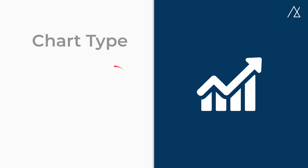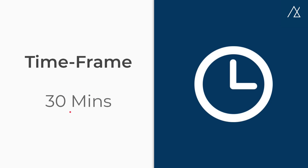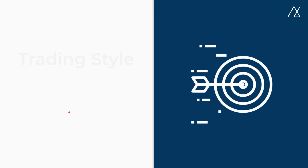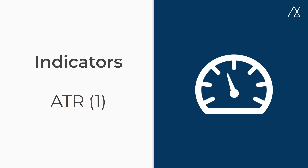Let's begin with trade setup. We are going to use candlestick as the chart type; if you are comfortable with OHLC or bar charts, that is also fine. For the timeframe, we will keep the chart interval at 30 minutes. Our trading style will be day trading, also known as intraday trading, meaning we won't carry positions overnight. We will be using the ATR indicator — Average True Range — with a period of 1. Change the indicator period from the default of 14 to 1; I'll show you the perfect setting when we check the charts.